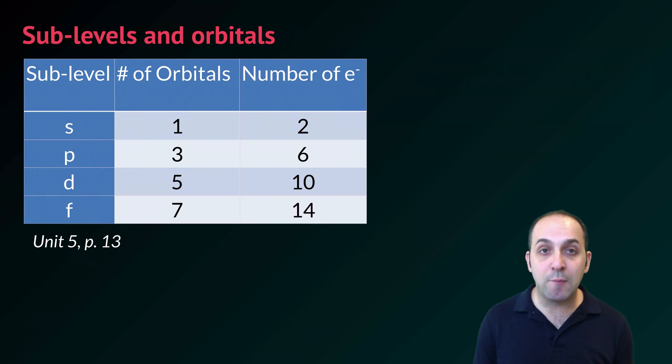So if we look at our sublevels from our last discussion and we consider how many total electrons could fit in each of those sublevels, you can then deduce the number of orbitals in each sublevel just by dividing the total number of electrons that can fit by two. So the S sublevel fits two electrons, it has one orbital. P fits six, it has three orbitals, D has five orbitals, and F has seven orbitals.